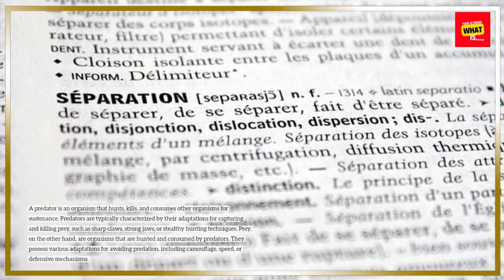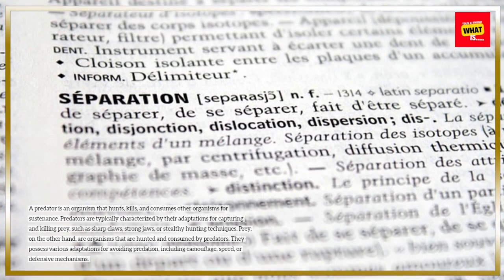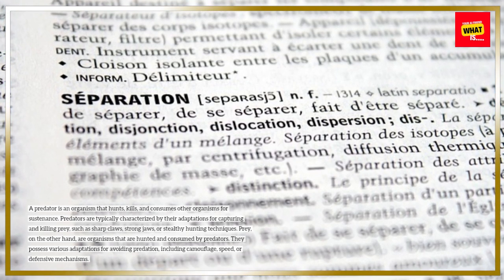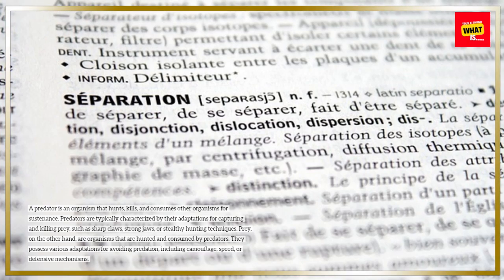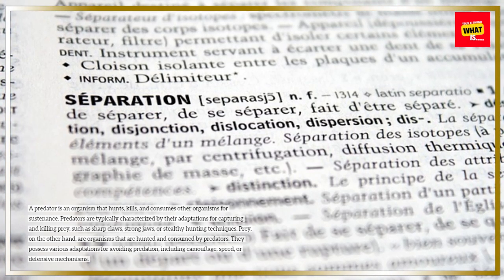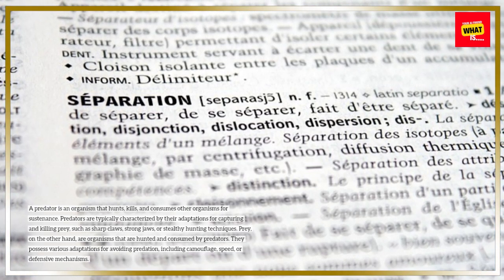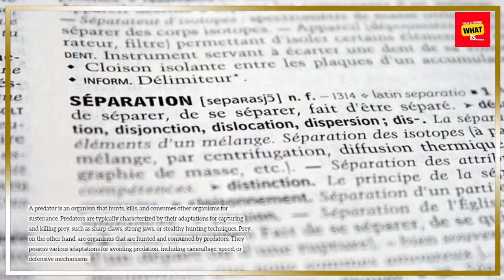Prey, on the other hand, are organisms that are hunted and consumed by predators. They possess various adaptations for avoiding predation, including camouflage, speed, or defensive mechanisms.